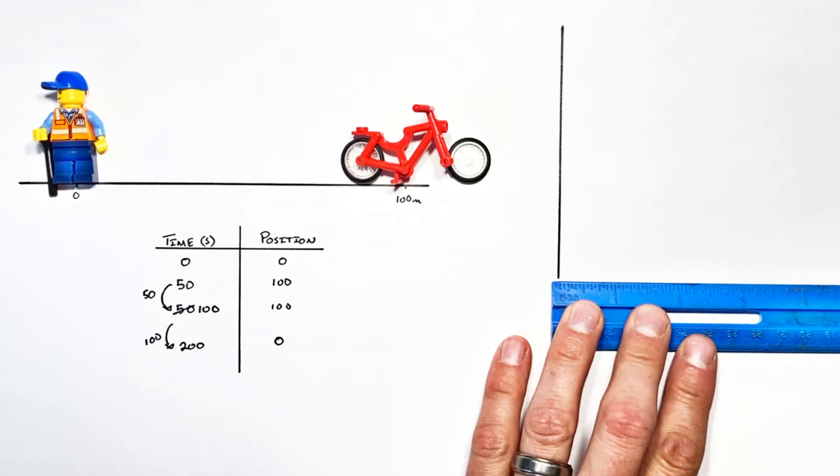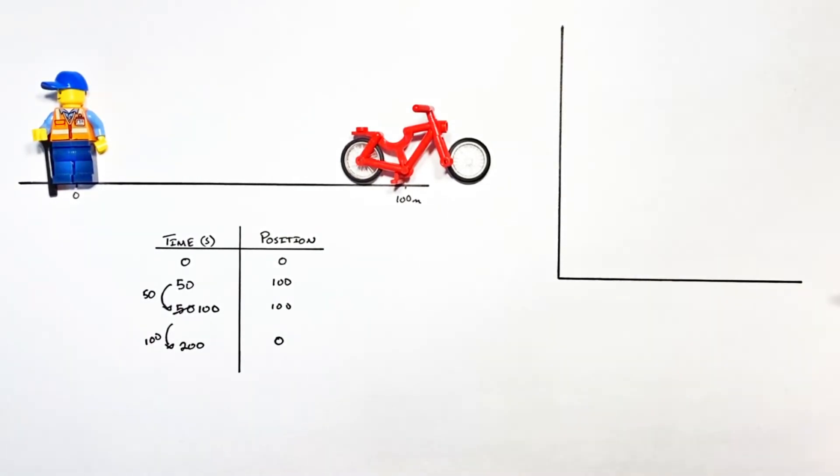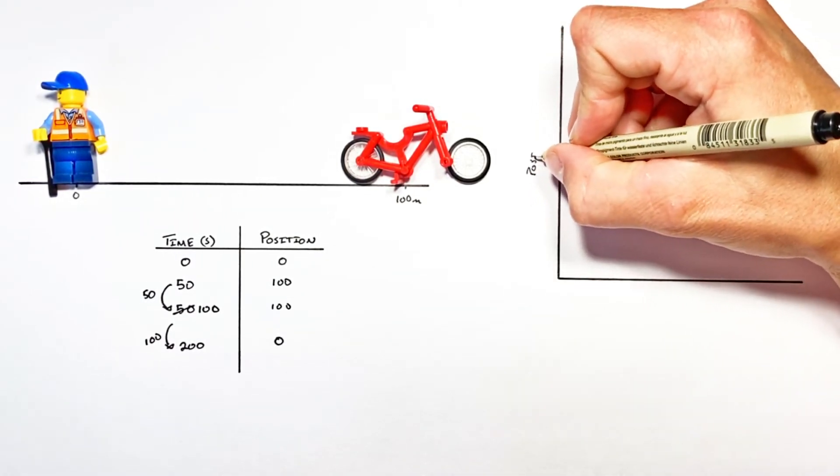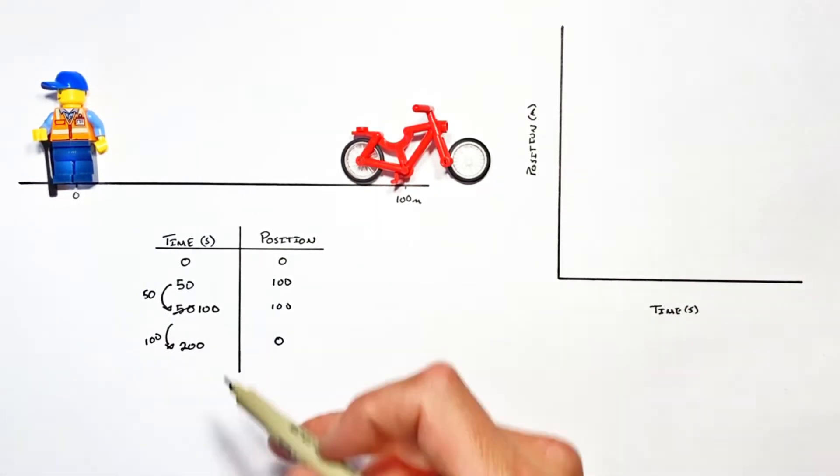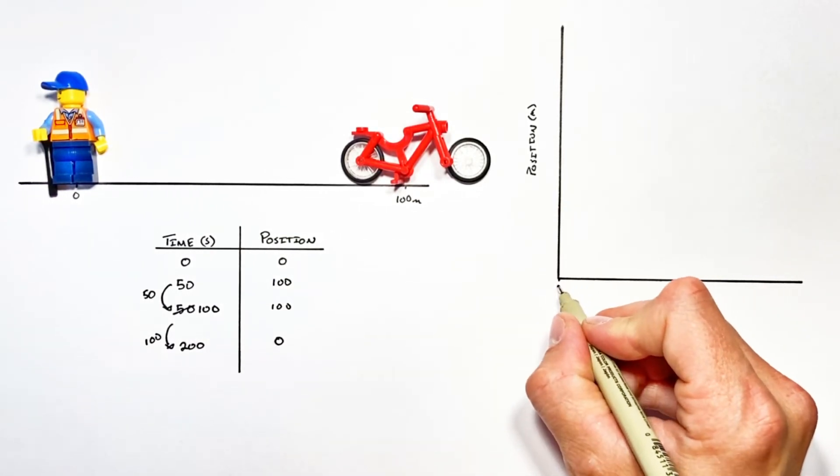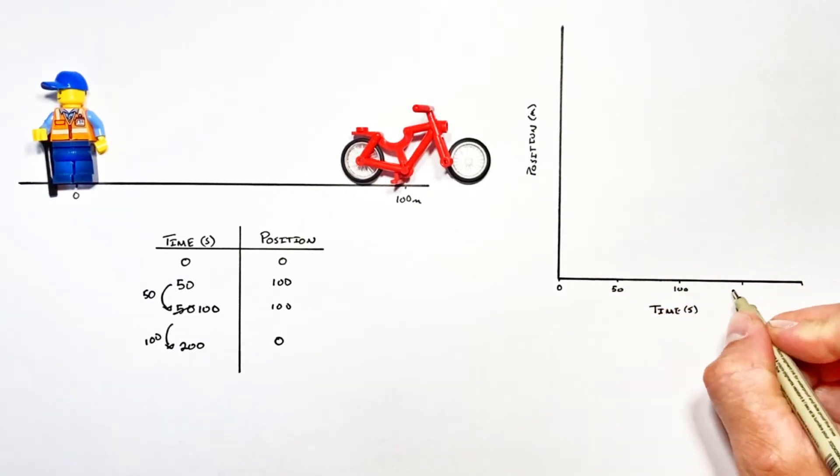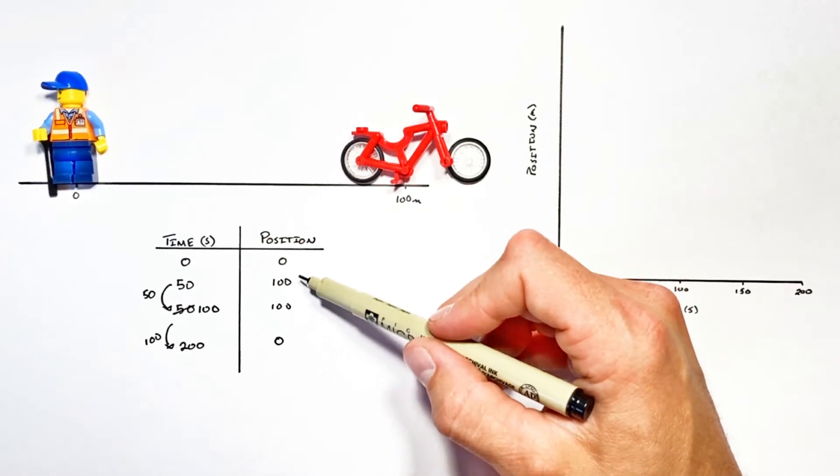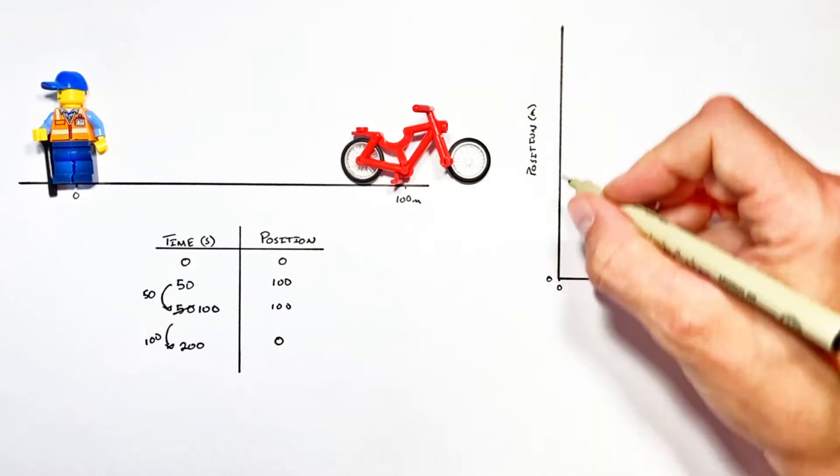So here's our graph. On the y-axis we're gonna put position and on the x-axis we're gonna put time. Now our times run from zero to 200 seconds, zero here and we'll run that time out on our graph to a time of 200 seconds. Our position had a minimum value of zero and a maximum value of 100 so we're just gonna run our positions from zero up to 100.